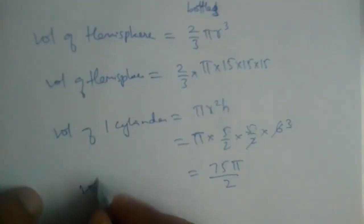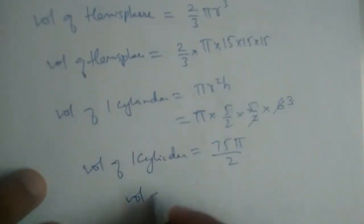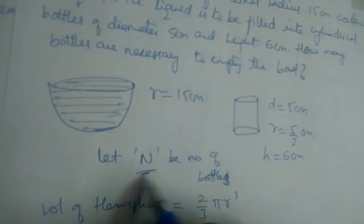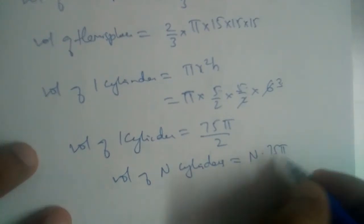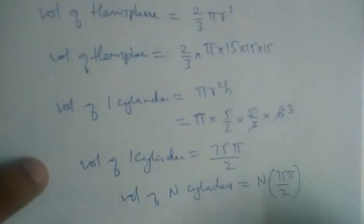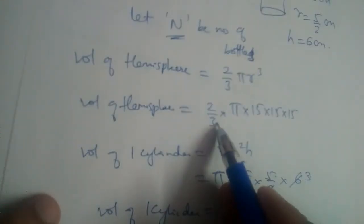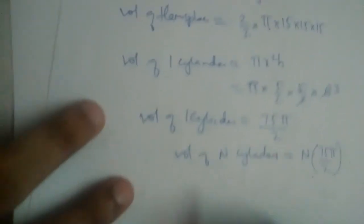The volume of n cylinders or n bottles is equal to n times 75π/2. Now this n times 75π/2 should be equal to 2/3 π times 15 times 15 times 15.